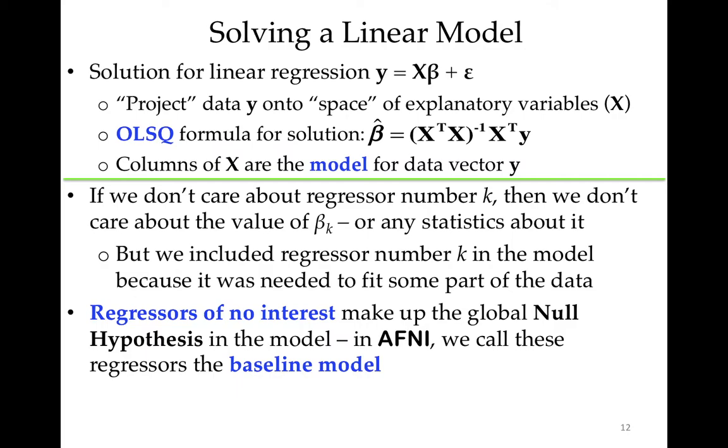Now, if we don't care about regressor number k, then we don't really care about the value of β_k, or many statistics that come from it. But we have to include it in the model if it's needed to fit some part of the data. We have to fit the data as it comes to us, not as we wish it was. And so in fMRI, we have to deal with things like the fact that the baseline goes up and down as a function of time. It isn't just constant. So these regressors of no interest in AFNI, we call these collectively the baseline model. Baseline isn't just a constant. It's all the stuff of no interest put together. And you can think of that as the global null hypothesis. That is, if they explain the data as well as can be explained, and we have some other task stuff, and that doesn't need to explain the data, then the null hypothesis is a good fit.